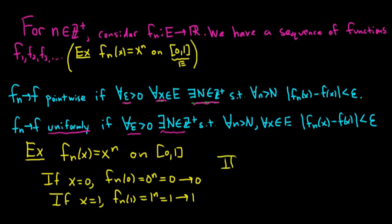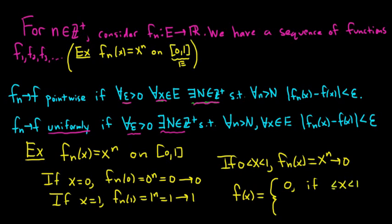And if x is not 0 and not 1, that means it must be strictly between 0 and 1. In this case, f sub n of x is simply x to the n. And it's pretty easy to prove that when x is a number between 0 and 1, as n approaches infinity, this will approach 0. So it looks like our f, the limit in this problem, is a piecewise function. And it looks like it's going to be 0 if x is less than 1 and greater than or equal to 0, and it's going to be 1 if x is equal to 1.